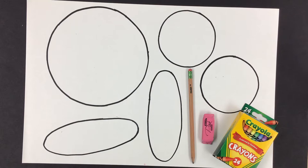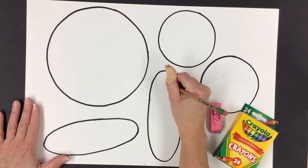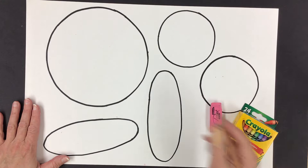Let's start with our Arctic Hare's ears. Using your pencil, we're going to draw the inside of our Arctic Hare's ears. It is going to be an oval inside of the oval.